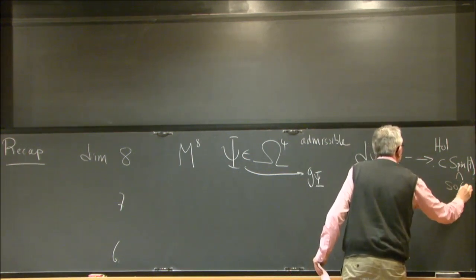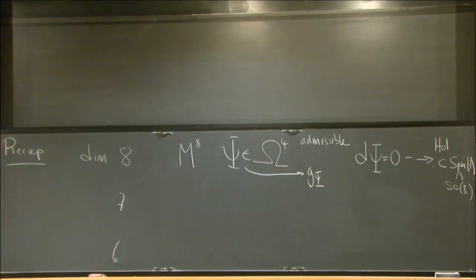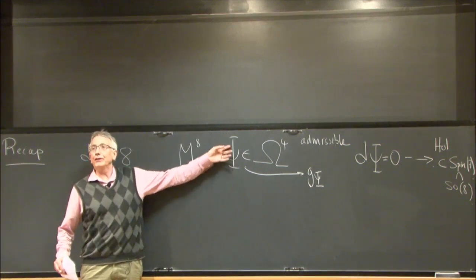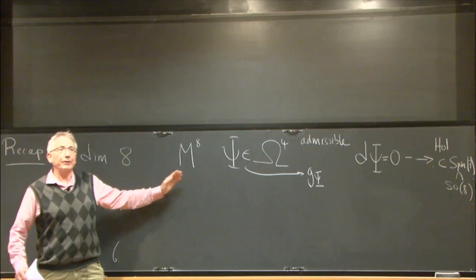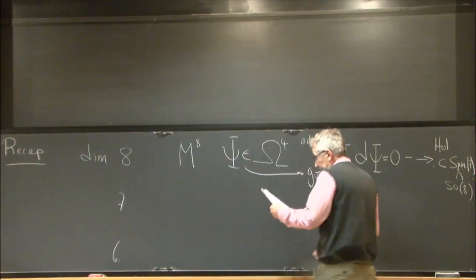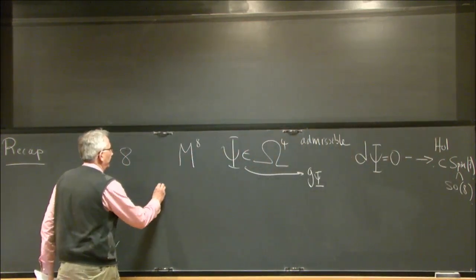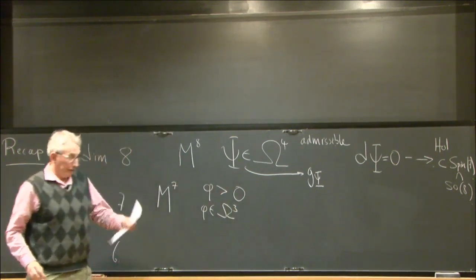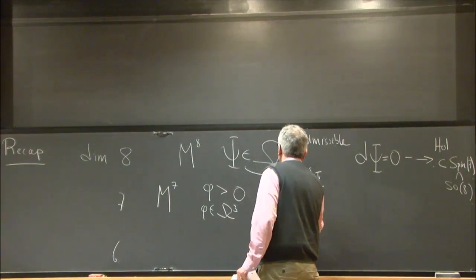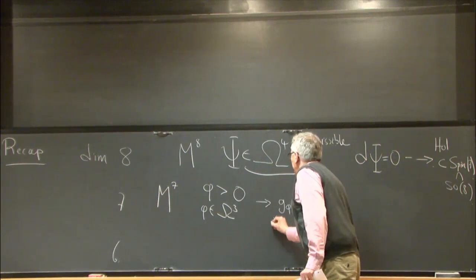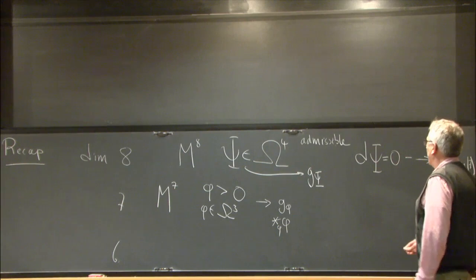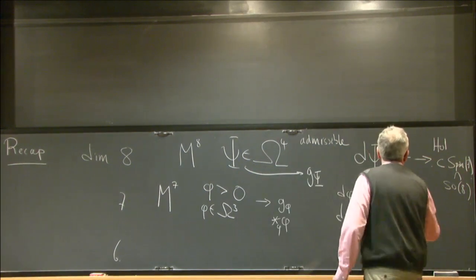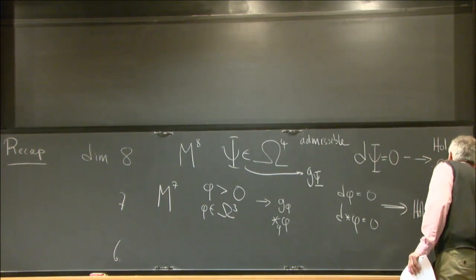Holonomy contained in SO8. But then we can reduce this discussion successively in dimension, reversing the process by which we built up our study from dimension 6. So if we consider an 8-manifold that's a product of a 7-manifold with a real line or circle, we can obtain corresponding results in 7 dimensions. If we have a 7-manifold and a positive 3-form, then purely algebraically we can construct a Riemannian metric g_phi and also the Hodge star — star_phi of phi. And if phi is closed and star_phi is closed, then we get a metric of holonomy contained in G2 contained in SO7.